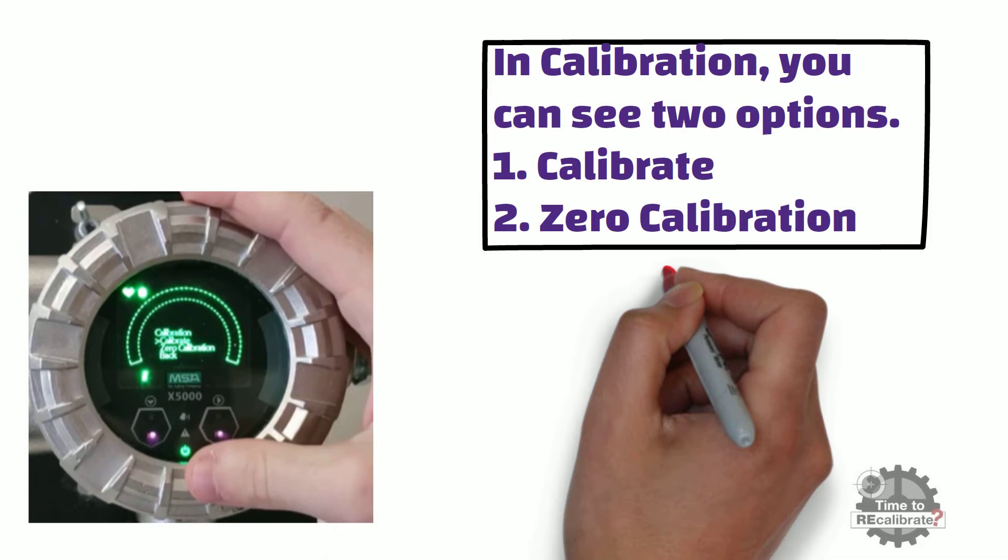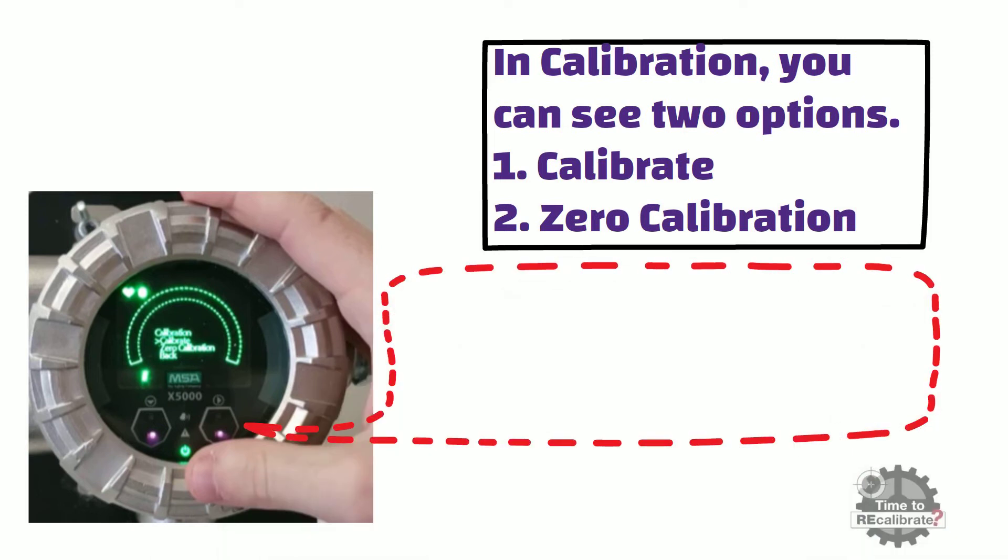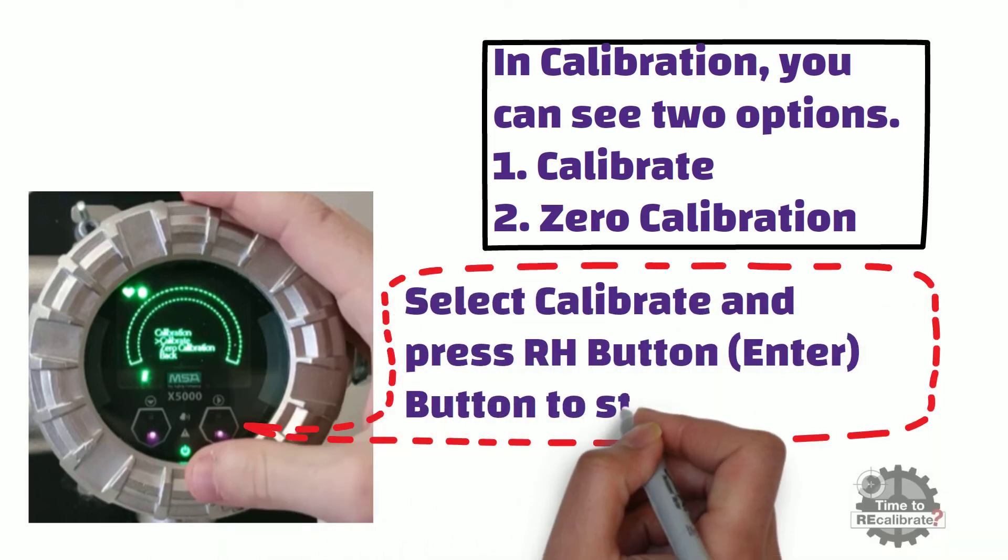In this example, we want to do full calibration. So, select the calibrate option and press the right hand button to start calibration.